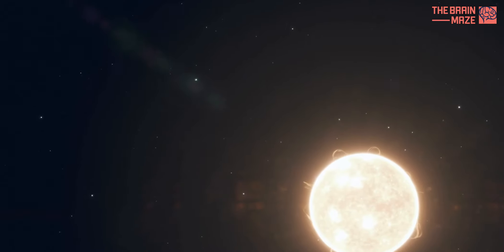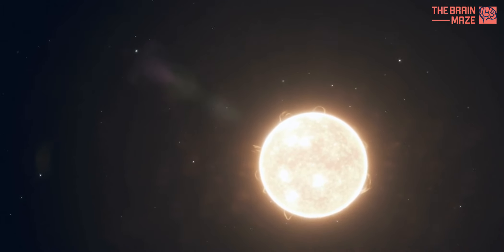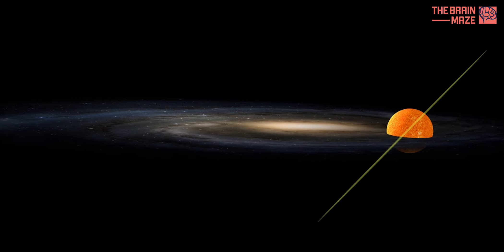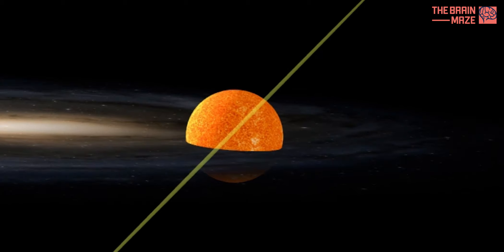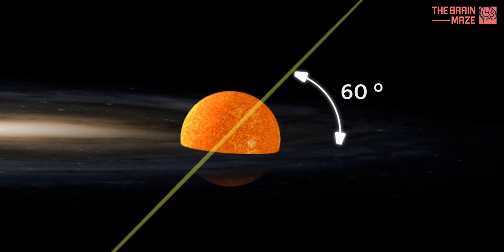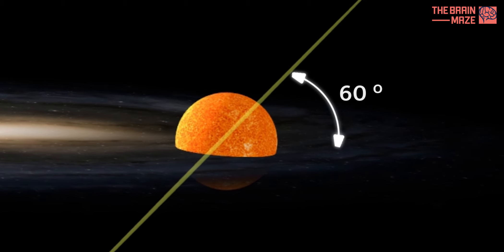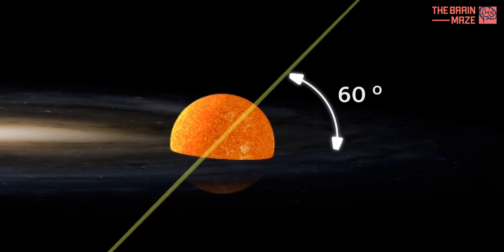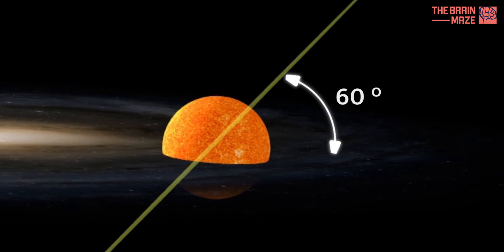There's another fascinating aspect to our celestial journey. The plane in which our planets orbit the Sun is tilted at an angle of about 60 degrees compared to the galactic plane. It's as if our entire solar system is leaning as it travels through space.